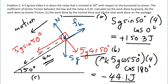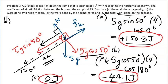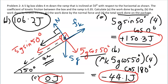Work done by the normal force: the normal force is perpendicular to the plane while displacement is along the plane, so the angle between them is 90 degrees. Cosine 90 equals zero, giving 0 joules. Whenever a force makes 90 degrees with the displacement, it does no work. The total work done on the package is the sum of all three: 150.3 minus 44.1 plus 0 equals 106.2 joules — positive work, meaning the object's speed increases as it slides down the plane.